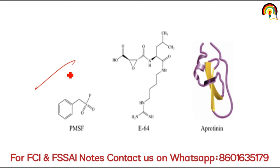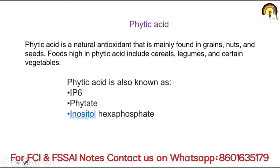Many different protease inhibitors are commercially available for use experimentally in both in vitro (laboratory) and in vivo (open environment) settings, and during protein purification. Examples of protease inhibitors include PMSF, E64, and Aprotinin. Next is phytic acid. Phytic acid is a natural antioxidant mainly found in grains, nuts, and seeds. Foods high in phytic acid include cereals, legumes, and certain vegetables. Phytic acid is also known as IP6, phytate, or inositol hexaphosphate.